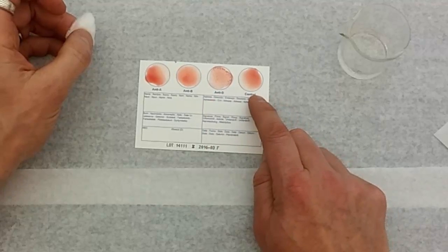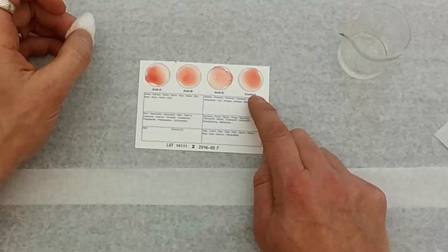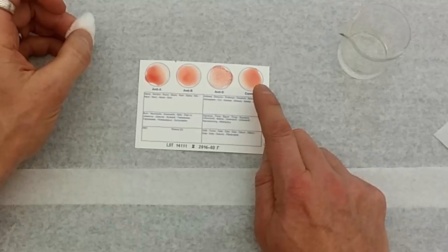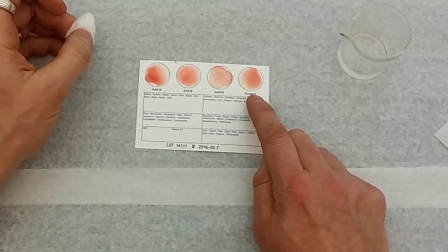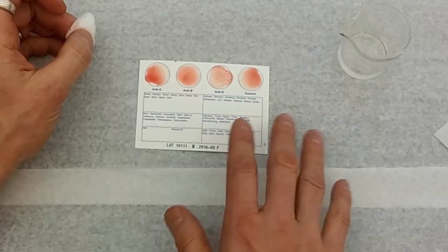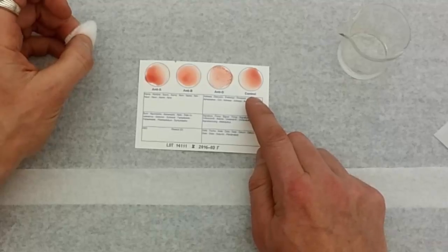And then lastly, in the control circle, remember there were no antibodies on this circle when we started. We should never see a reaction in this circle. If we do see a reaction in this circle, then that means that the test is bad and we have to do it again. We have to throw out that test.